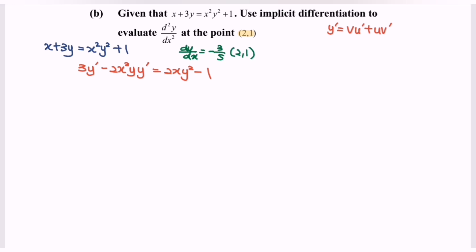Next, what we have to do is to find the second derivative. Kindly focus on the equation 3y prime minus 2x² times y times y prime equals 2x times (y² minus 1). Focus on the term 3y prime.